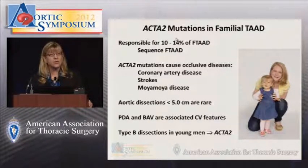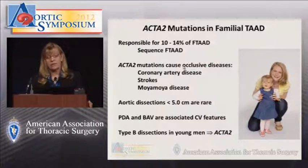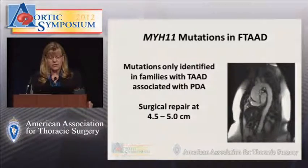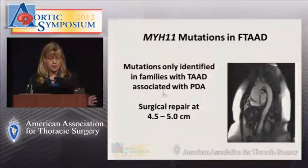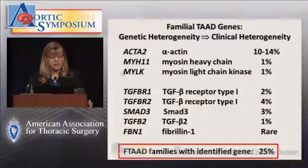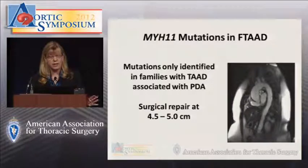ACTA-2 encodes alpha-actin, part of the actin filaments important for contractile function in smooth muscle cells. MYH-11 encodes myosin, another part of the contractile filament. We've only identified MYH-11 mutations in families with thoracic aortic disease associated with patent ductus arteriosus. These aneurysms involve the ascending aorta and spare the sinuses, differing from the syndromic presentation. We've seen a fair number of dissections between 4.5 and 5 centimeters, so we recommend surgical repair around 4.5 centimeters in these families. The last gene, myosin light chain kinase (MYLK), controls smooth muscle cell contractile function, but we don't yet have enough families to clearly dictate clinical management.